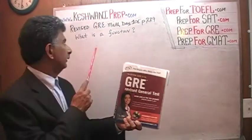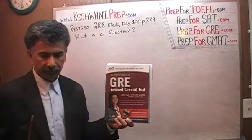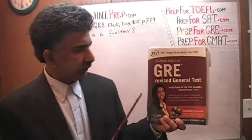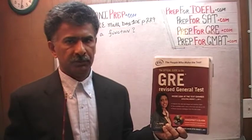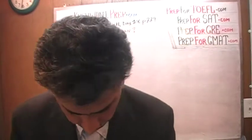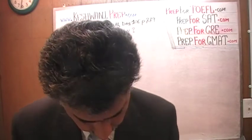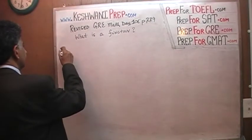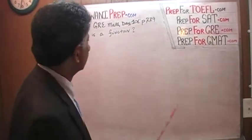Hello, my name is Keshwani — that's K-E-S-H-W-A-N-I — Keshwani. We are here because we want to prepare for the GRE. We have been solving GRE math problems out of this book: the Official Guide to the GRE Revised General Test. If you do not own this book already, purchase one immediately. The problem we're going to work on right now is on page 229, section 2.6.1.